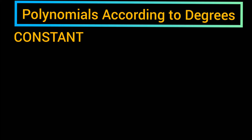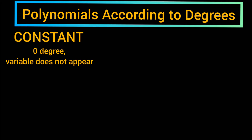Polynomials according to degrees. Constant: zero degree, or the variable does not appear. Examples: 8, negative 4, negative 3 over 4.